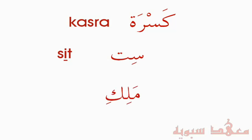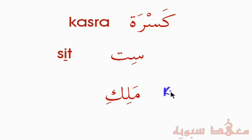For example, we have the following word: the Meem has a Fatha — 'Ma' — then the Lam has a Kasra — 'Li' — then the Kaf has a Kasra — 'Ki.' So together: Maliki. 'Malik' means 'king.'